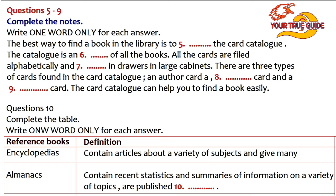For example, all science books are numbered from 500 through 599. Each different field of science has a number within the 500 category. For example, astronomy is 520 and chemistry is 540. The Dewey Decimal System provides a category for every type of non-fiction book.